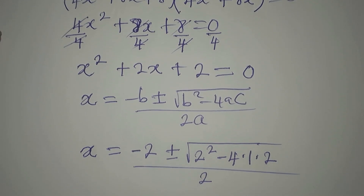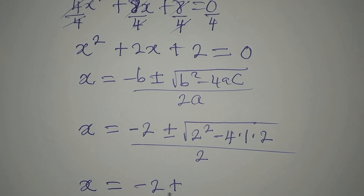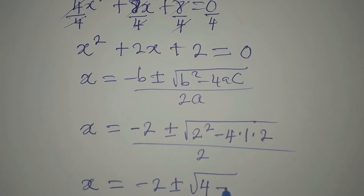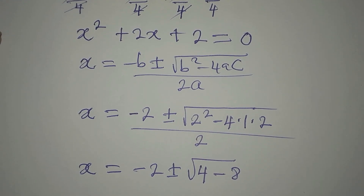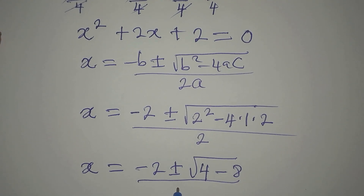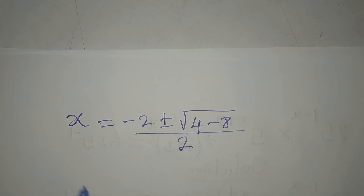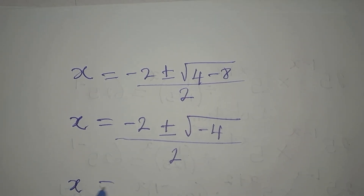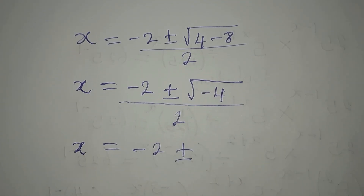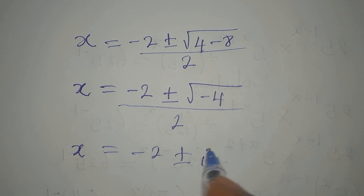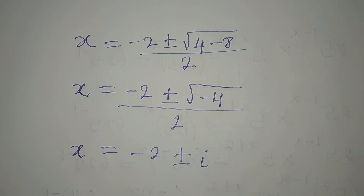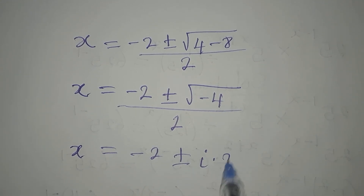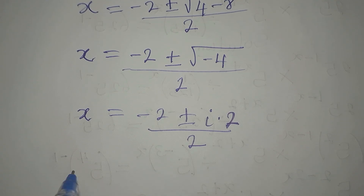So x = (-2 ± √(4 - 8)) / 2. Since 4 times 1 times 2 is 8, we get √(4 - 8) = √(-4). This negative under the square root gives us the imaginary unit i, because it's not giving us a real solution — it's complex. So √(-4) = 2i.